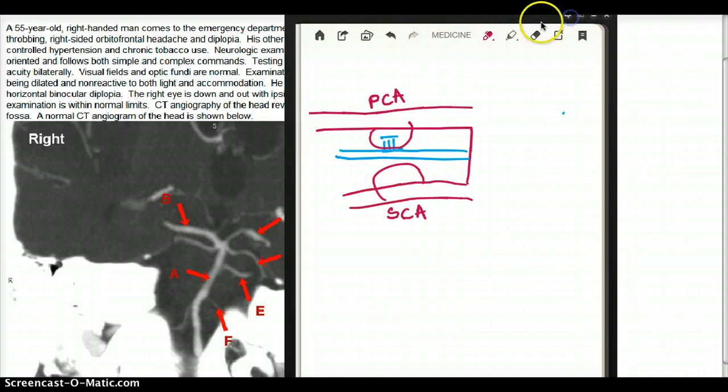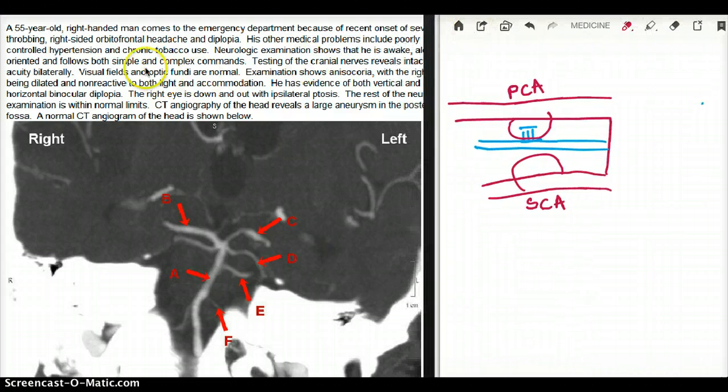So this patient, who is a chronic smoker, which is a big risk factor for aneurysms, and has poorly controlled hypertension, which is another big factor for aneurysms, has cranial nerve deficits. So I'm thinking either PCA or SCA is going to have an aneurysm. Point is, it's pressing on cranial nerve 3.